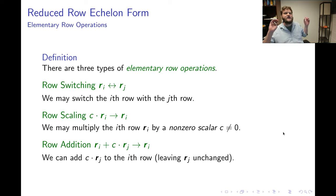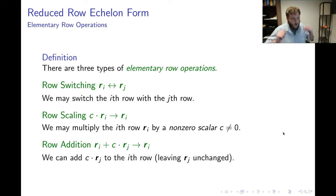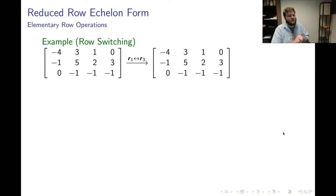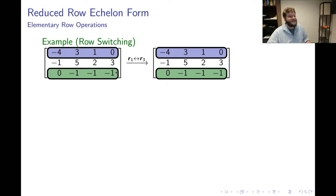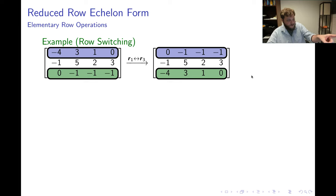The Gauss-Jordan elimination algorithm uses these operations. To illustrate row switching: on the left I have a 3×4 matrix, and using the notation r1 ↔ r3, I identify row 1 and row 3 and switch them to construct a new matrix. That's row switching — just switch two rows to produce a new matrix.